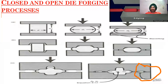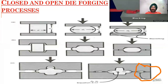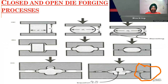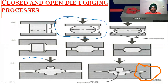Looking at the diagram, we can see a bar being processed. First, the edges and corners are shaped, then it is blocked. It is then removed and cut. In open die forging, the die is open and the material can flow freely. The bottom part and top part of the die are both visible — this is open die forging.